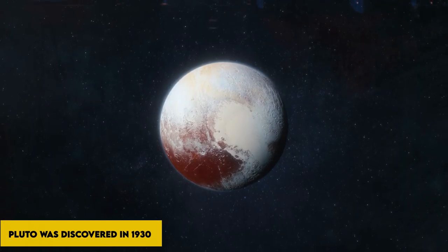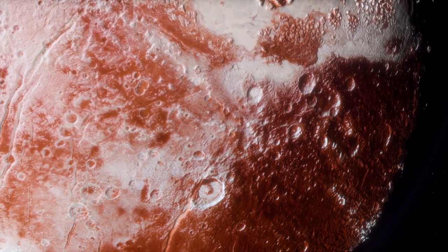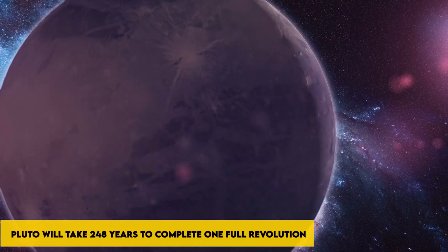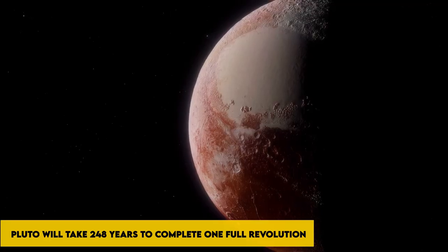Pluto was discovered in 1930, and, as a point of comparison, it has not yet completed one full orbit around the sun. It is predicted that Pluto will take 248 years to complete one full revolution.